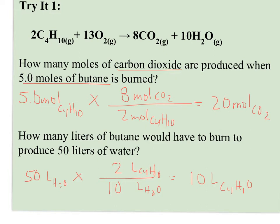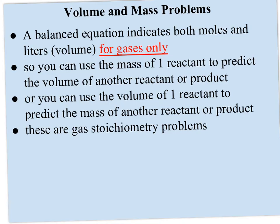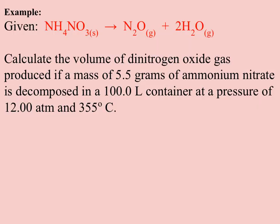Those were the easy ones because we didn't have to convert between grams. But oftentimes you have a gas or liquid where volume is easy to measure, plus a solid where mass is involved. When you don't have all gases and can't just convert between volumes, we need to use stoichiometry and convert from grams to moles. An equation tells us volume, moles, and molecules, so we can use the mass of one reactant to predict the volume of another, or vice versa.